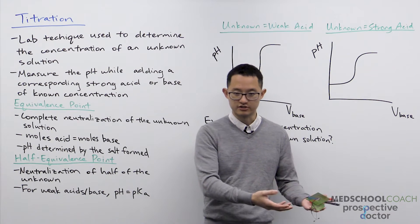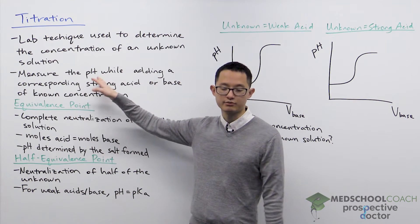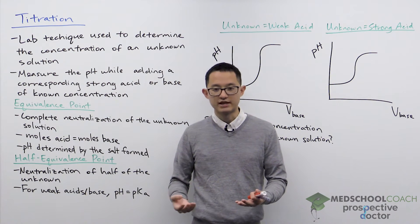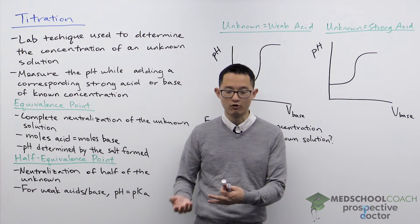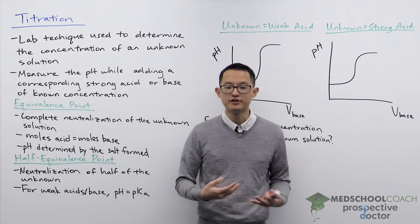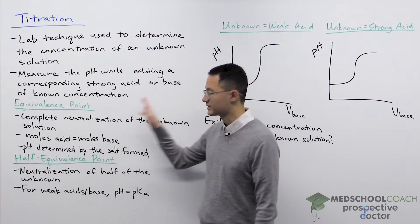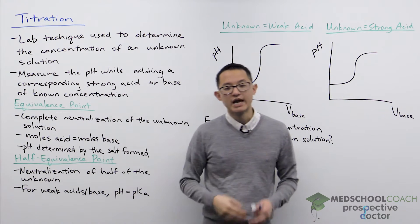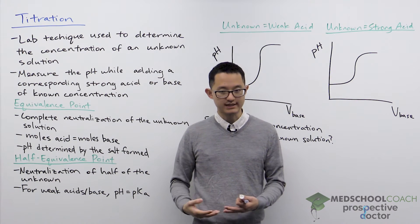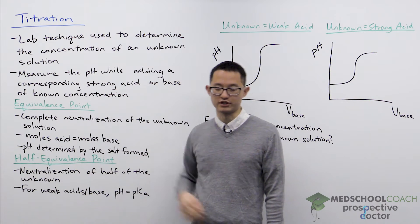You want to find out the solution's concentration, and you can do that by first putting a pH probe in the solution. You're going to see that the pH is either going to be above seven or below seven. If it's below seven, your unknown solution is acidic, so you're going to add a strong base of known concentration. If the pH is above seven, your unknown solution is basic and you're going to add a strong acid of known concentration.